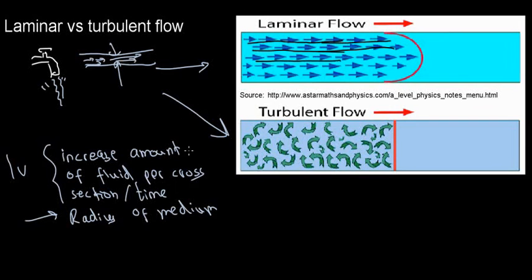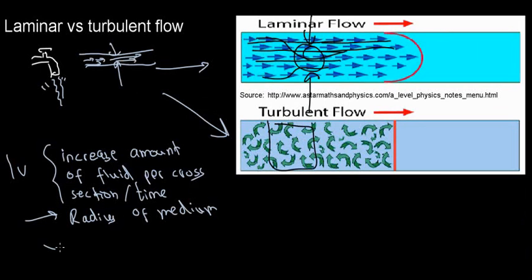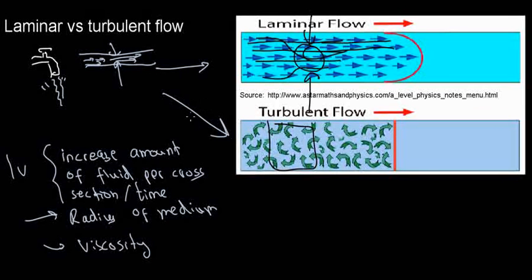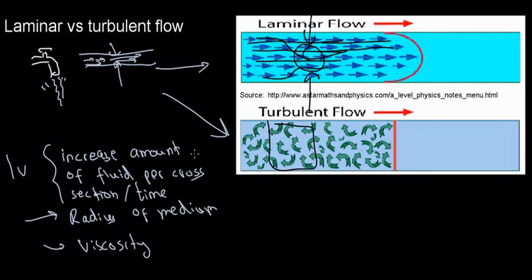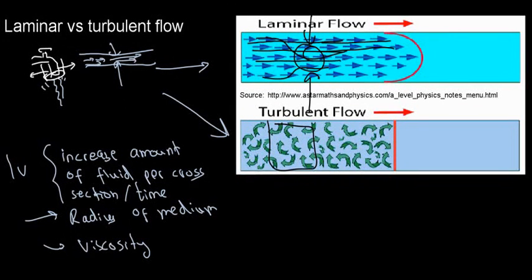The radius of the medium definitely has an implication on whether the flow is laminar or turbulent. If I squeeze the medium, the flow in the middle will be much quicker and we may see turbulent flow there. Also, the viscosity of the fluid affects the point at which turbulence occurs. If you widen the opening again, the turbulent flow may become laminar again.